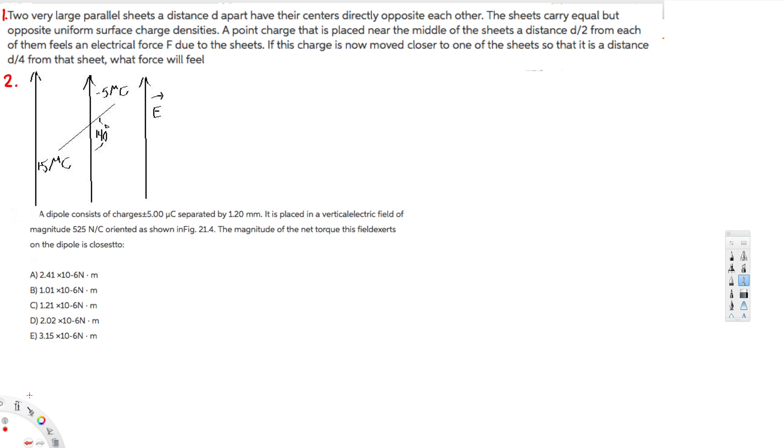What's going on guys, let's do this problem right here. The question is asking: two very large parallel sheets a distance d apart have their centers directly opposite to each other. The sheets carry equal but opposite uniform surface charge densities.